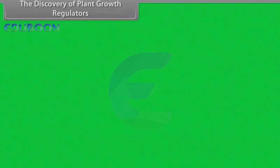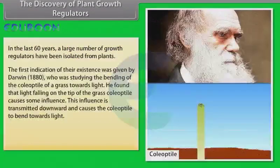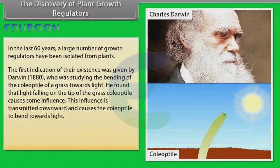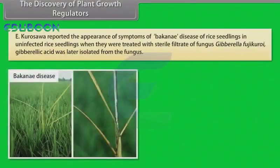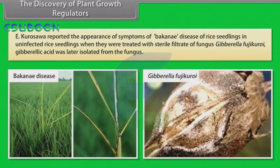The discovery of plant growth regulators: In the last 60 years, a large number of growth regulators have been isolated from plants. The first indication of their existence was given by Darwin (1880), who was studying the bending of the coleoptile of a grass towards light. He found that light falling on the tip of the grass coleoptile causes some influence, which is transmitted downward and causes the coleoptile to bend towards light. F.W. Went isolated auxin from the tip of the coleoptiles. E. Kurosawa reported the appearance of symptoms of bakanae disease of rice seedlings in uninfected rice seedlings when treated with sterile filtrate of fungus Gibberella fujikuroi. Gibberellic acid was later isolated from the fungus.